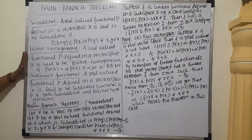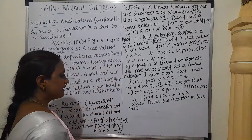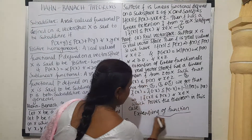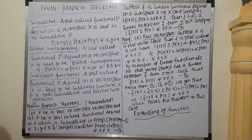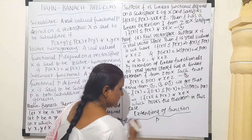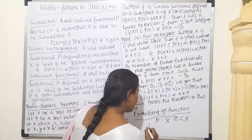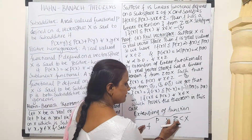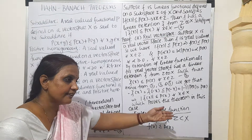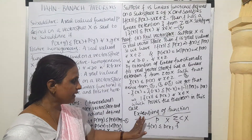Now, these are the definitions for functionals. There is a theorem on Hahn-Banach — before the main theorem, there is another theorem about extensions of functionals. The statement is: if we have a sub-additive functional P on a vector space X, and Z is a subspace of X, and we define another functional F on Z where F(x) ≤ P(x), then this functional can be extended to F̄. This is also called the Hahn-Banach theorem on extension of functionals. We will just use that result without proving it.